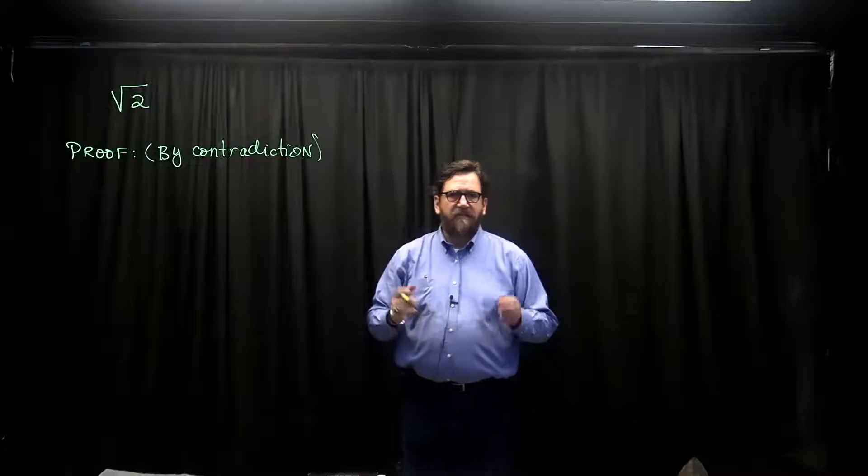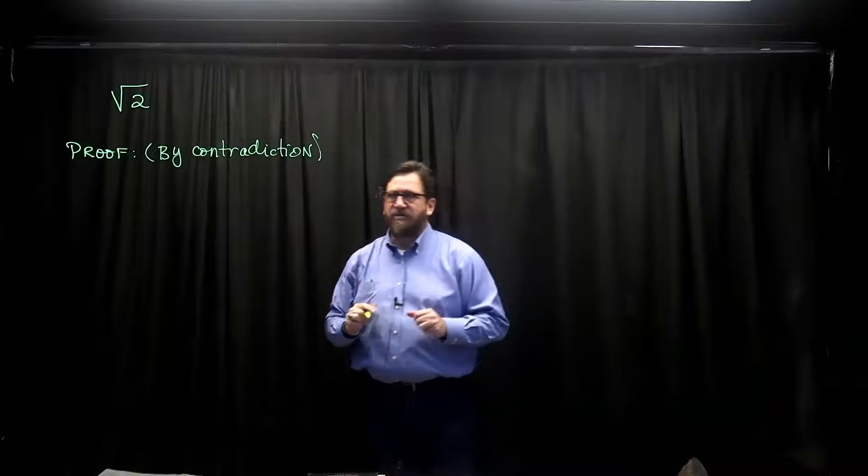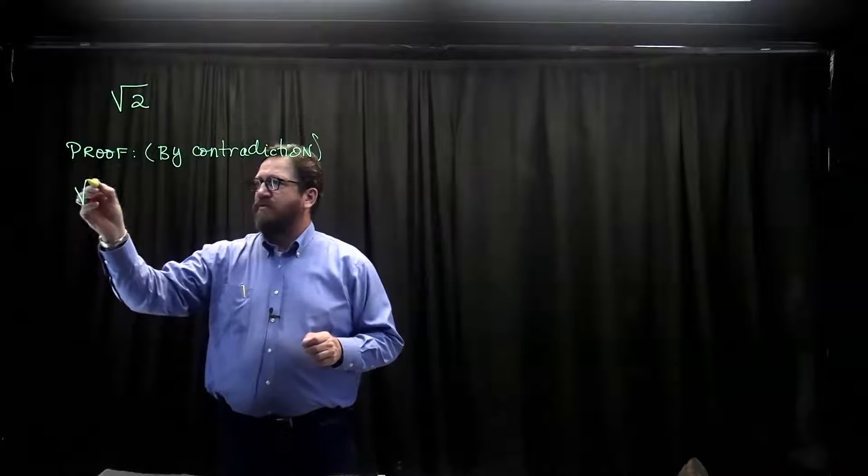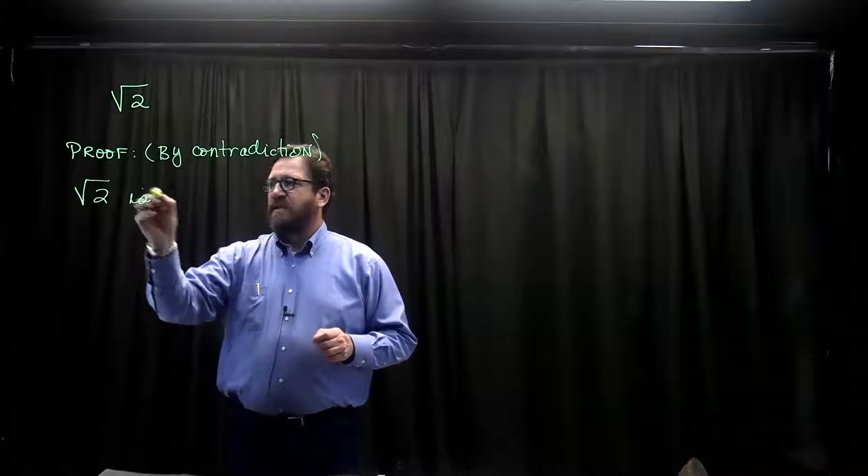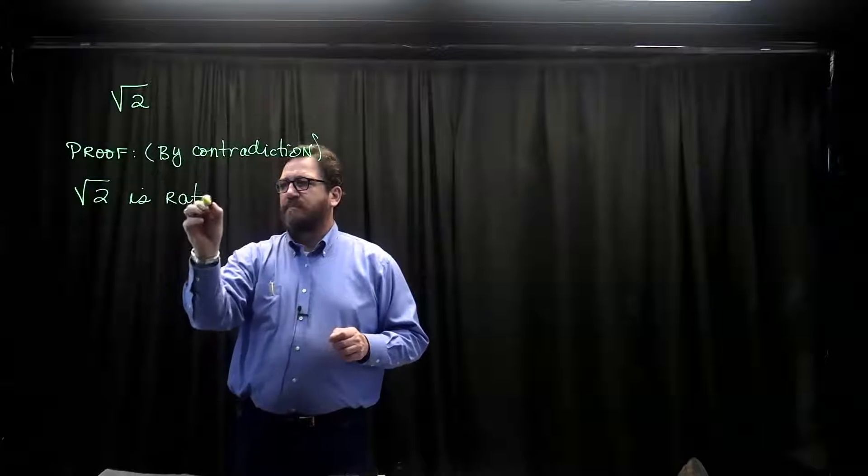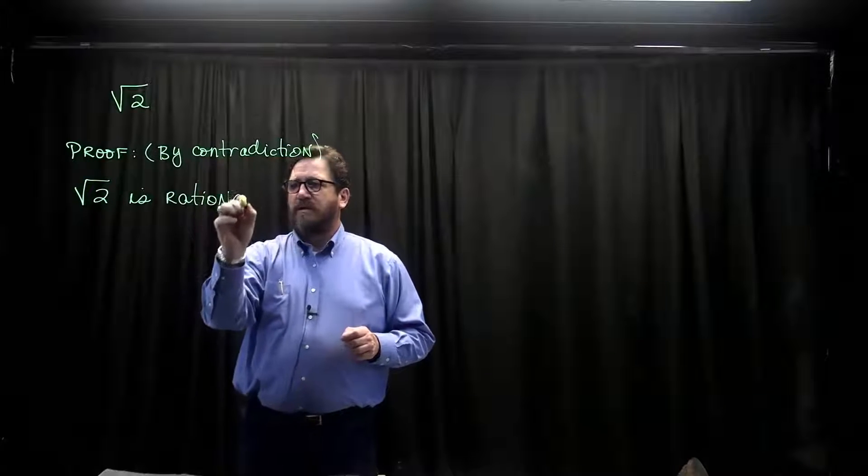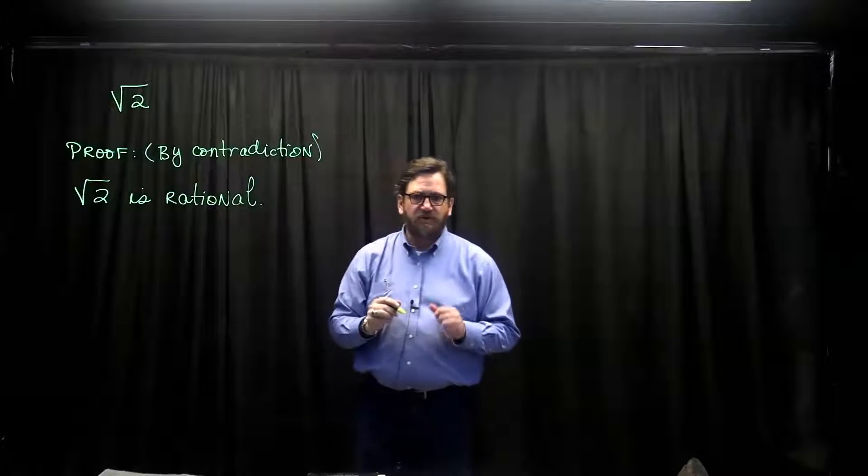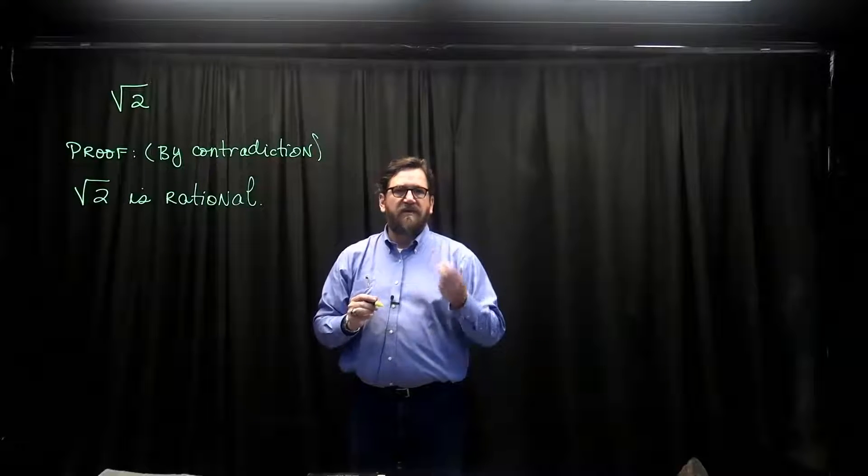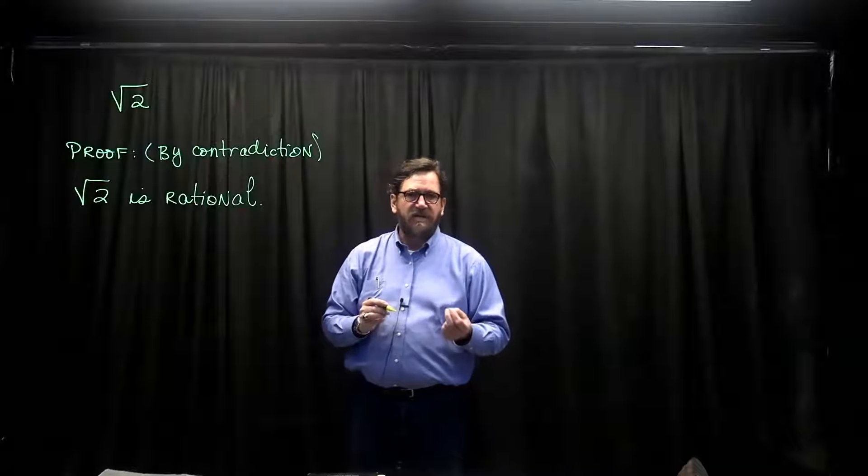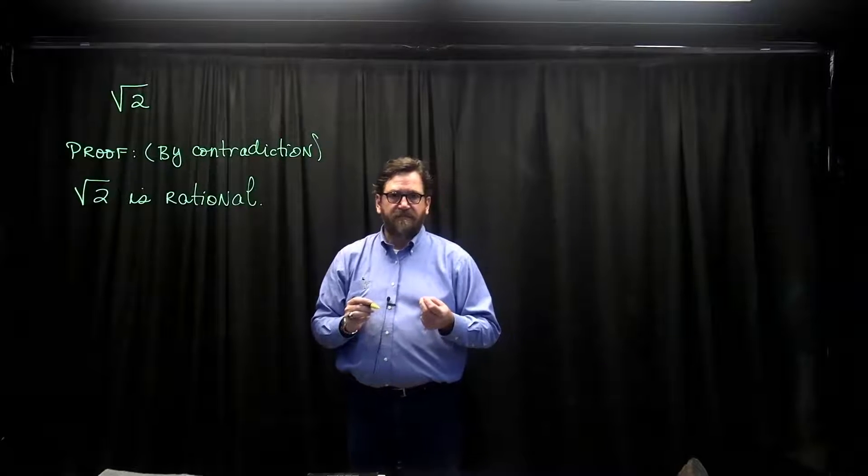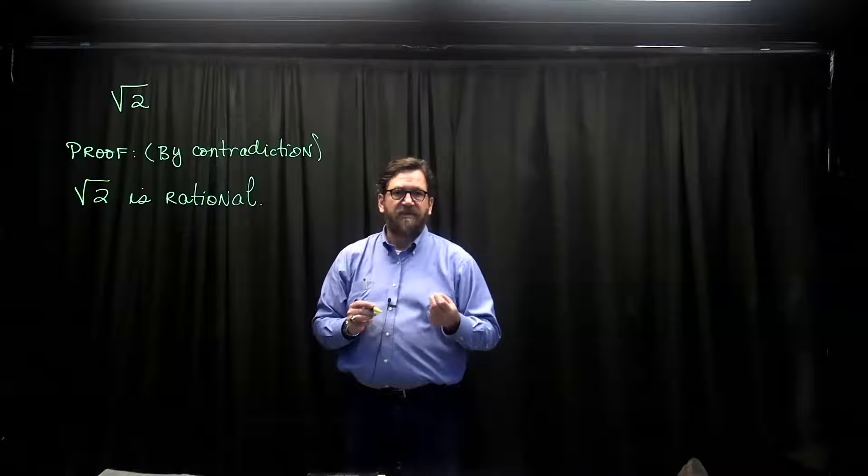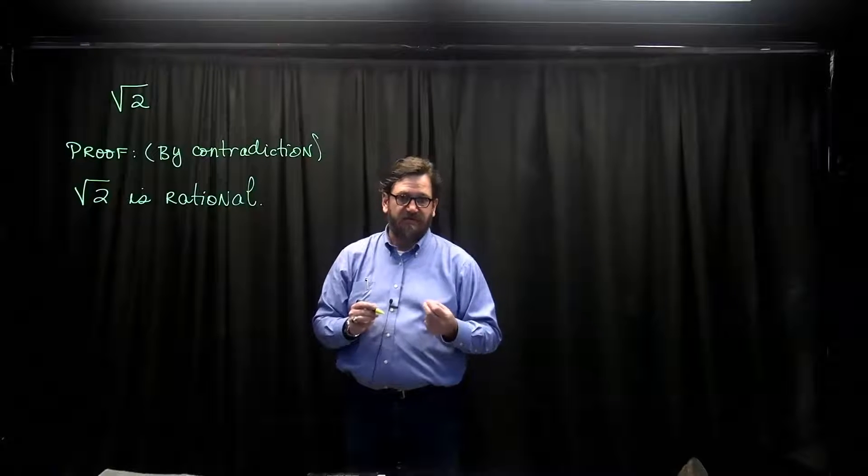Proof by contradiction basically says, make an assumption. And the assumption that we make is the square root of 2 is rational. And we're going to show that if that statement is a true statement, that it will lead to some absurdity in mathematics. Let's watch which absurdity comes out of this assumption of a false statement.